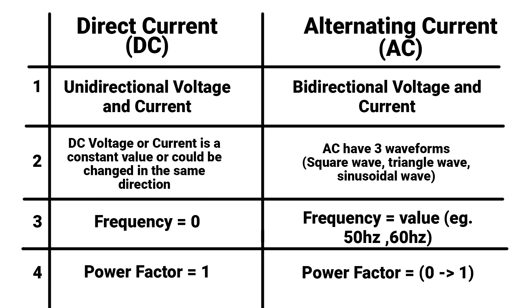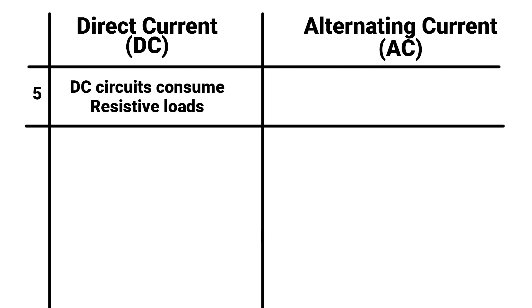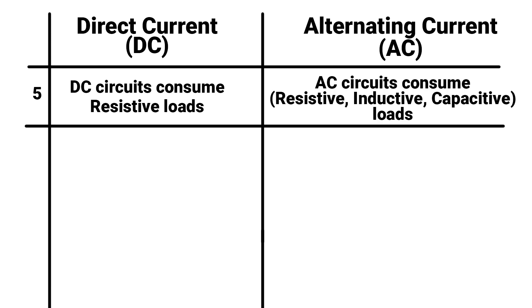So, in DC, we have only resistive load. But in AC, we have resistive, inductive, and capacitive load.